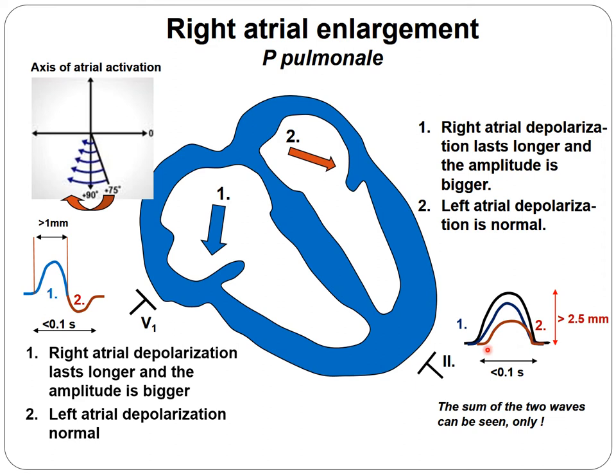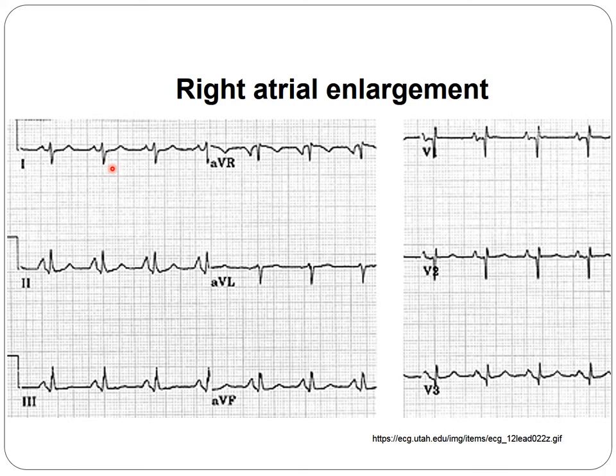Looking at right atrial hypertrophy in lead II, the base is narrow — less than 0.1 second — however the amplitude is bigger than two and a half millimeters. This is called P pulmonale. When looking at the axis of atrial activation, it is shifted toward the right, so the atrial axis can be bigger than plus 60 degrees. Looking at the next ECG tracing, the rhythm is regular and the heart rate is around 80.